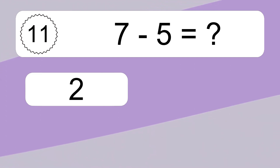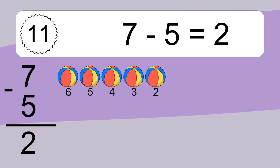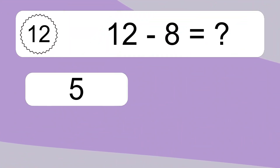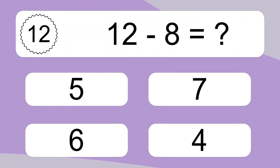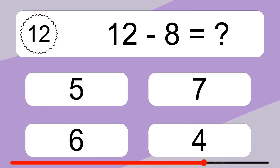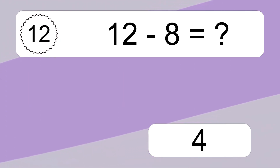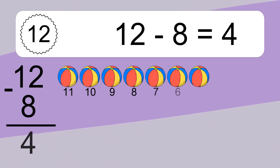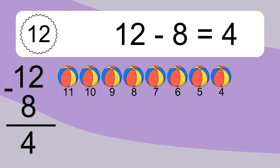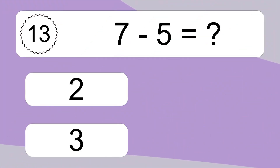7 minus 5 equals what? 7 minus 5 equals 2. Let's count it: 6, 5, 4, 3, 2. 12 minus 8 equals what? 12 minus 8 equals 4. Let's count it: 11, 10, 9, 8, 7, 6, 5, 4.